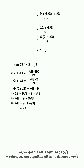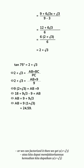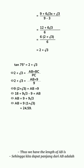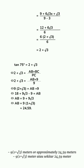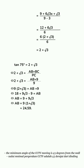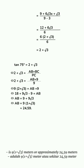Calculating to find the length of AB, we get AB = 9(1 + √3) meters, or approximately 24.59 meters. In conclusion, the viewing distance of the CCTV, when the minimum angle of movement is 45 degrees from the wall, is 9(1 + √3) meters or approximately 24.59 meters.